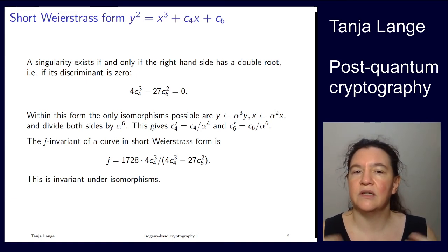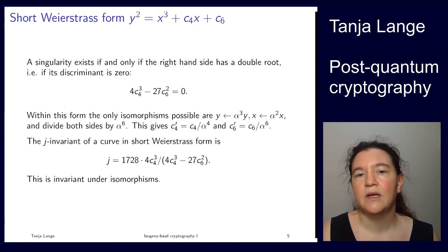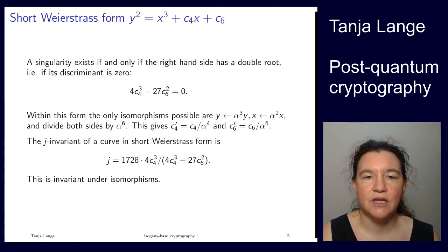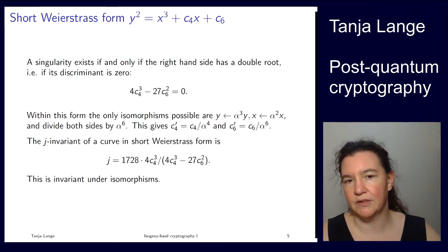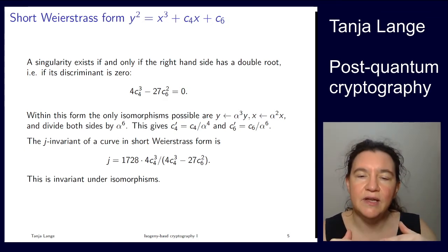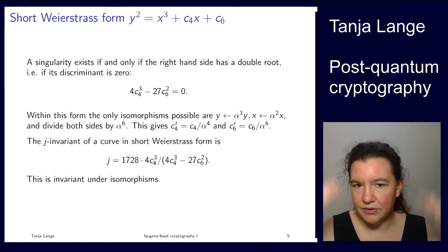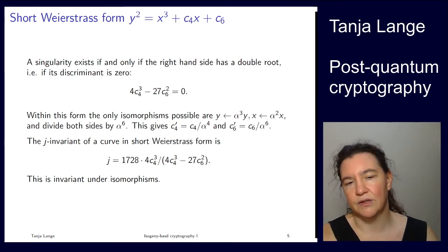A thing we'll need later is called the j-invariant. That is an invariant of isomorphism classes, of curves under these isomorphisms. When you put in some alpha, this will all cancel out. You'll have alpha to the 6 on top and alpha to the 12th on bottom. This j is invariant under these isomorphisms. It covers more than just rational isomorphisms, also isomorphisms over extension fields. Depending where alpha lives, you might be going to larger field isomorphisms. j doesn't care because these scaling factors divide out. It's an invariant under isomorphisms but not specific to the field.